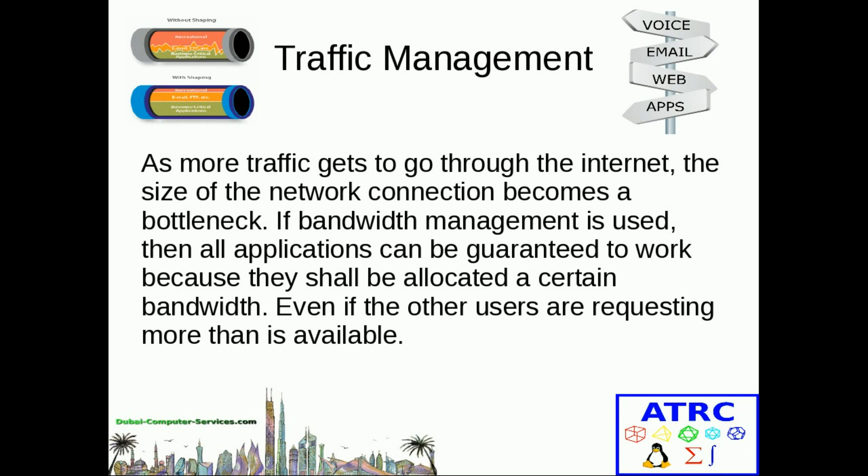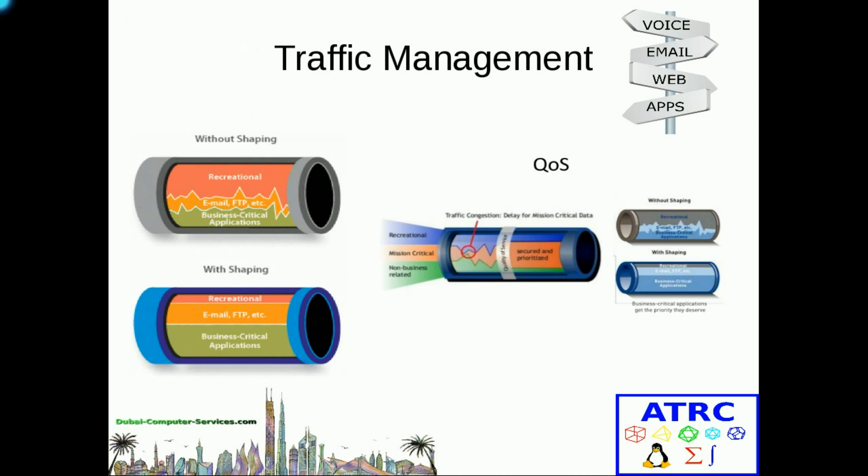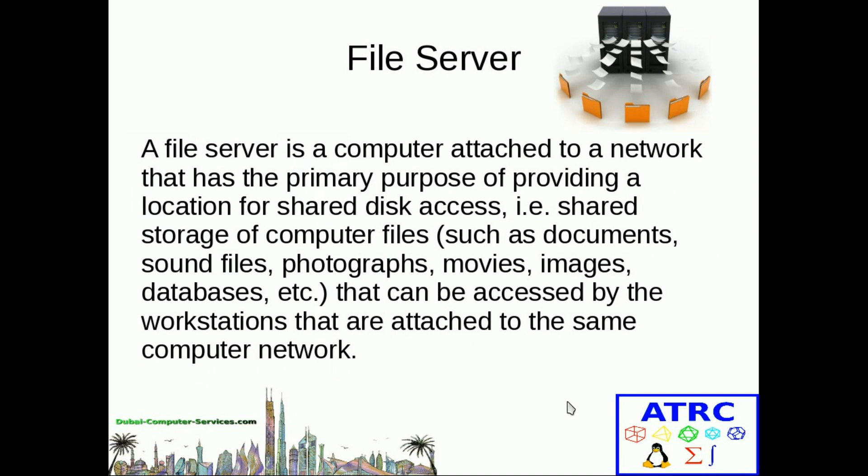When someone downloads a large file, it requests many packets and can choke the connection, delaying packets for other software. Other applications may time out waiting for packets, causing programs to fail. With a traffic management system, every user or application gets an allocated bandwidth, so no single user or software can hog all the internet or network bandwidth. This keeps users happy and reduces the need to pay for very expensive high-capacity connections. Without traffic shaping you get fluctuating traffic; with shaping, bandwidth is allocated per software and user.